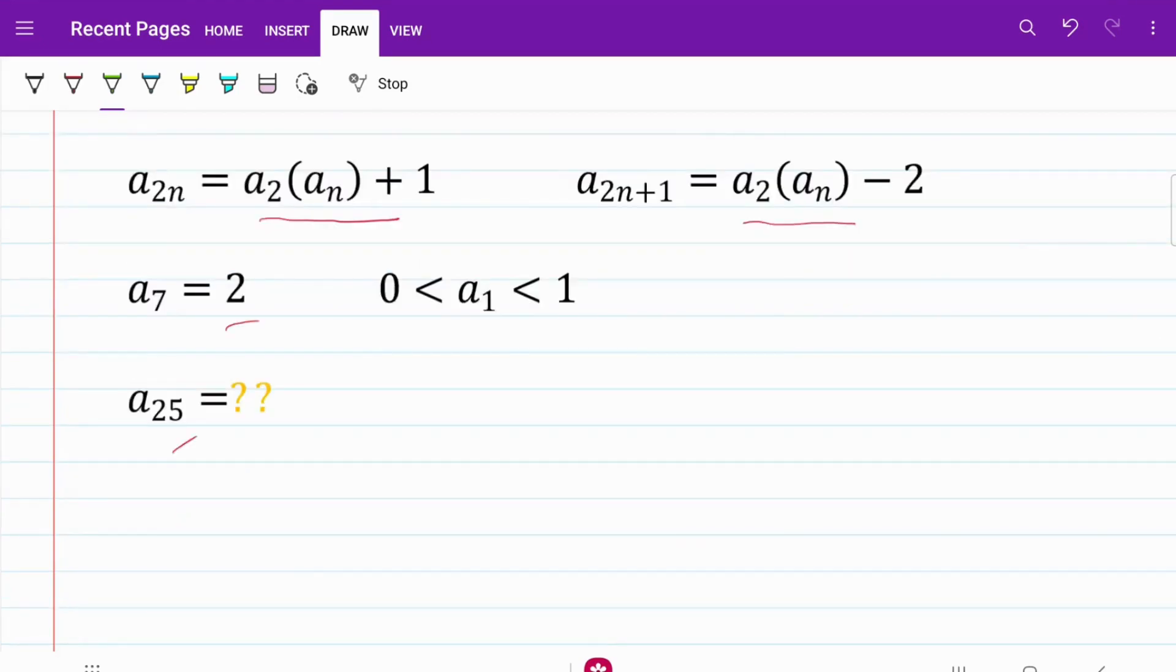Let's deconstruct A25 using these two formulas. I'm going to express A25 as A2(12) + 1. From there, that's equal to A2 multiplied by A12 - 2.